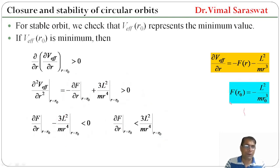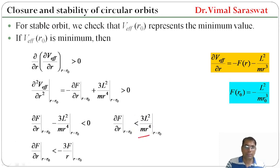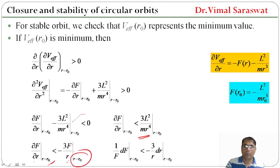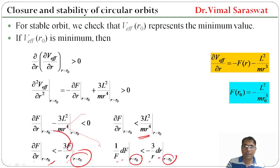Since F(r₀) = −l²/(mr₀³), we can write 3l²/(mr⁴) = −3F/r. So the condition becomes ∂F/∂r|_{r₀} < −3F/r|_{r₀}, which rearranges to (1/F)(dF) < (−3/r)(dr).